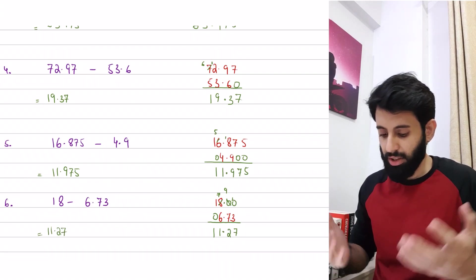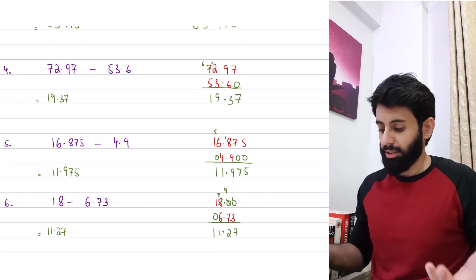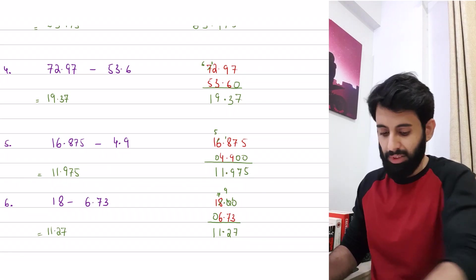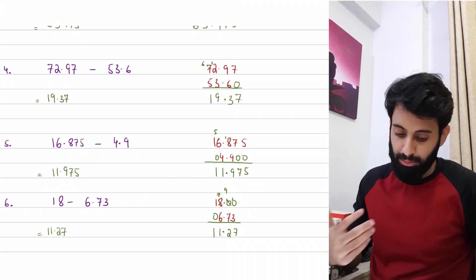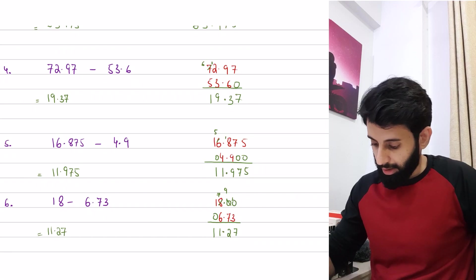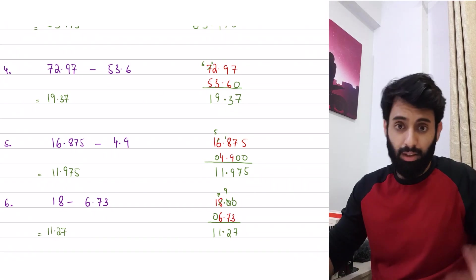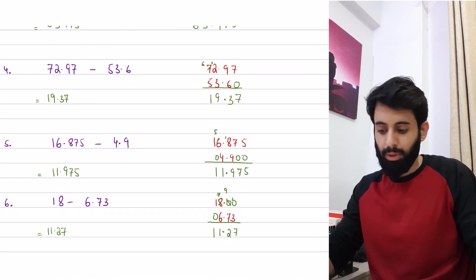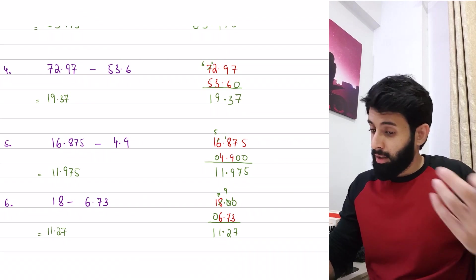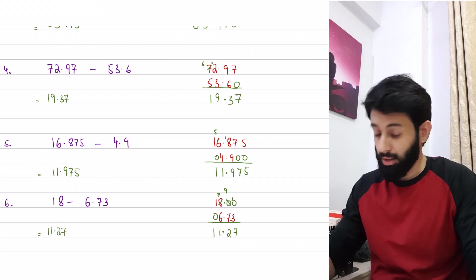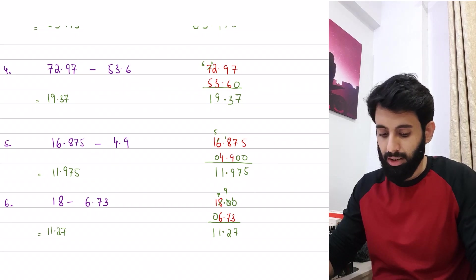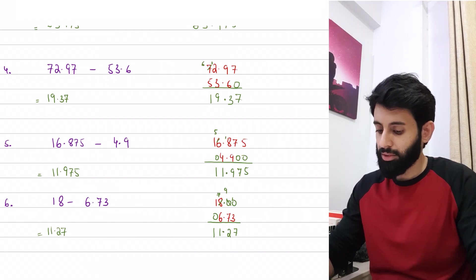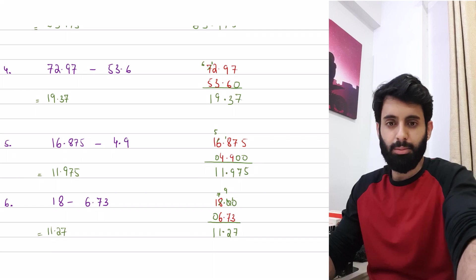That's how you do decimal addition and subtraction. You can practice on your own — just write down two numbers with decimals, add or subtract them, and use your calculator to check your answer. I'm particularly talking to students appearing in May/June 2022. In the next video we'll cover multiplication and division. If you do well in Paper 1 — which you can — your chances of getting a higher grade go up exponentially. Let me know what other basic topics you'd like me to cover.